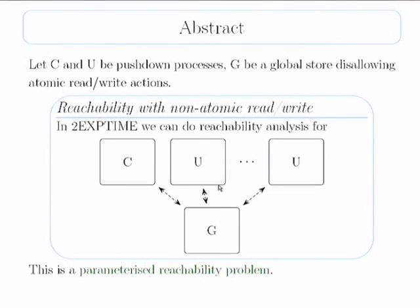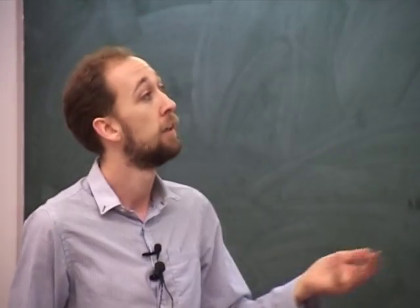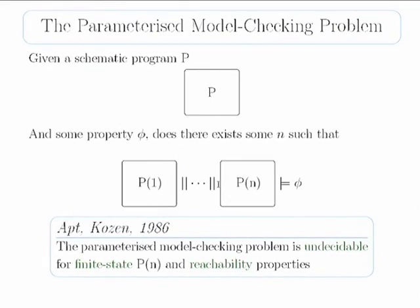So that's my result, and I'll go through the history and why I think it's an interesting story. We begin with the parameterized model checking problem: given a schematic program P — basically a program defined with an input N, where how the program looks depends on N — we ask: is there some value of N we can pick such that the program defined by N satisfies a certain property phi?